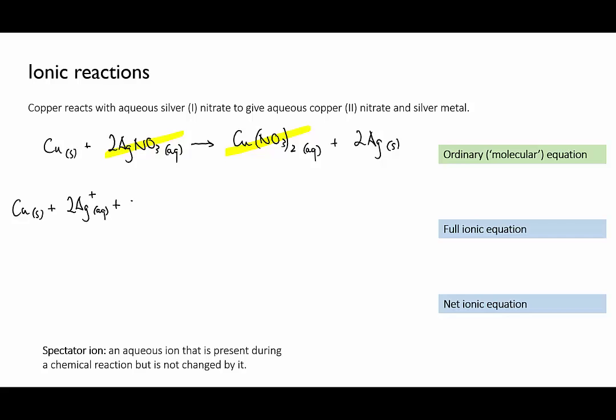There are two silver nitrates, so that gives us two separate silver one plus ions and two separate nitrate ions. On the other side the aqueous copper nitrate will become one copper two plus ion and two nitrate ions. The metals copper and silver are not ions. They are metal elements made of neutral atoms, shiny and malleable and with other metallic properties. They are also solids and not dissolved.